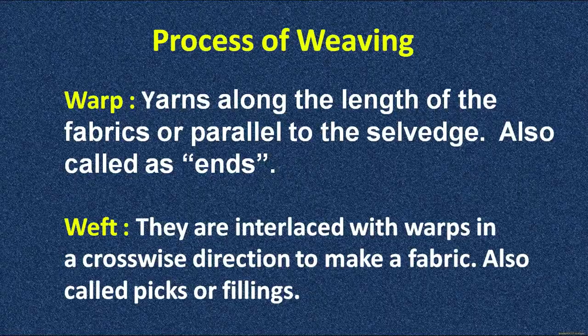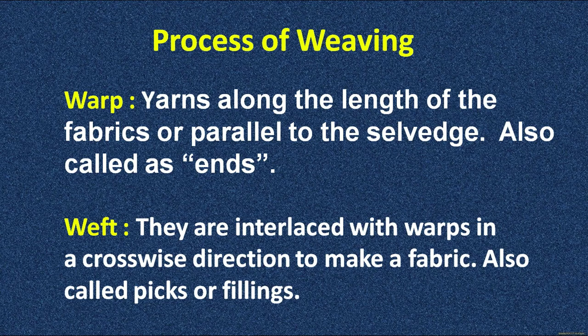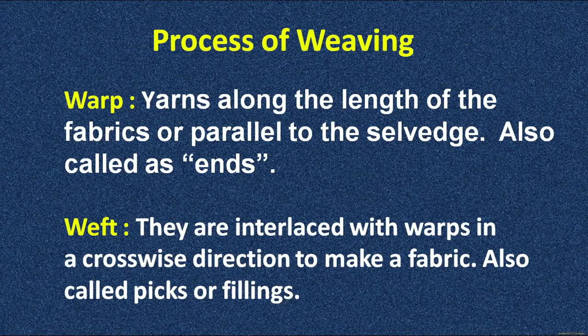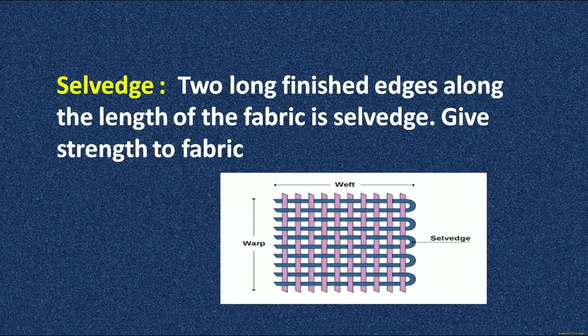First is warp yarn — yarns that run along the length of the fabric, parallel to the selvedge, are called warp yarn or 'ends.' Next is weft yarn — weft yarns are interlaced with warp in a crosswise direction to make a fabric. You can see the warp yarns are the longitudinal or perpendicular ones, and the weft yarns are the horizontal ones. When these two kinds of yarns interlace one another at right angles, the kind of sequence we get is the pattern.